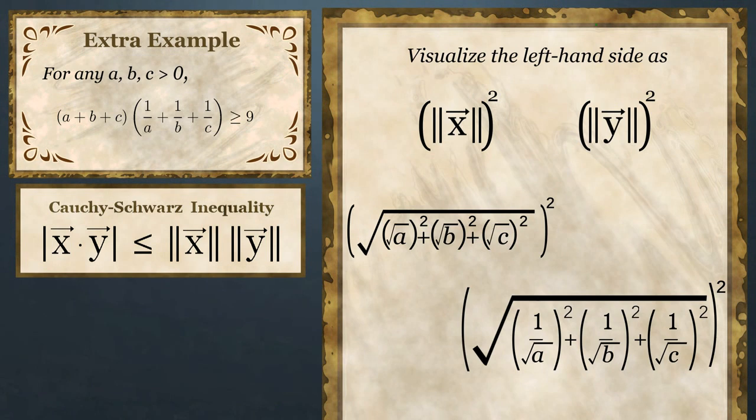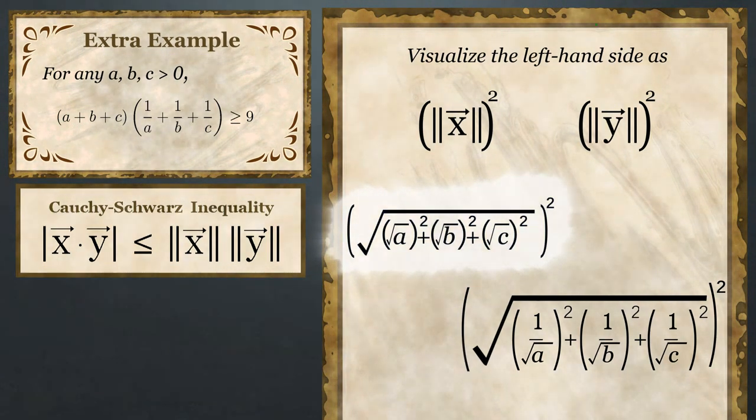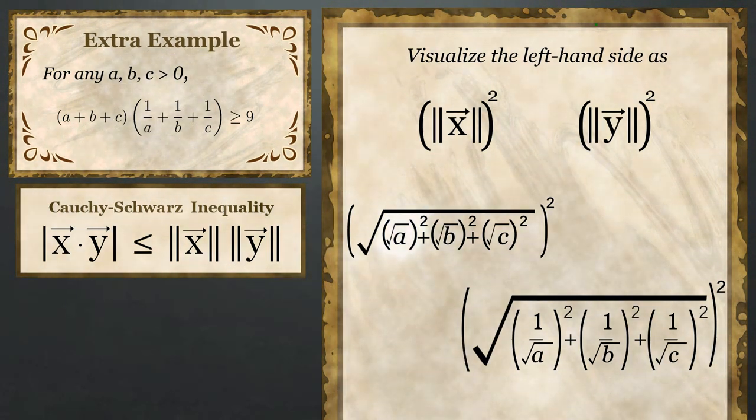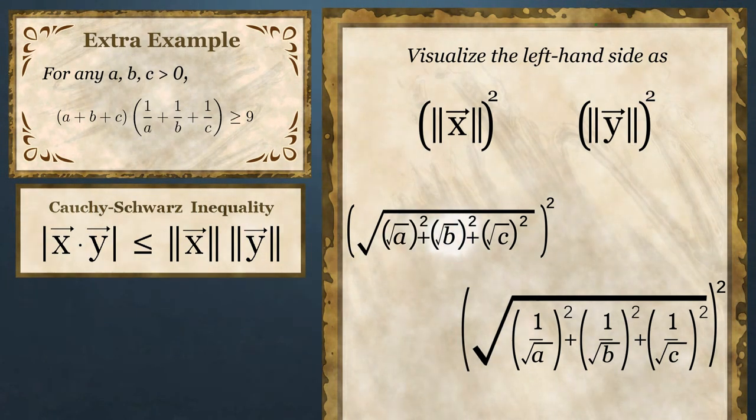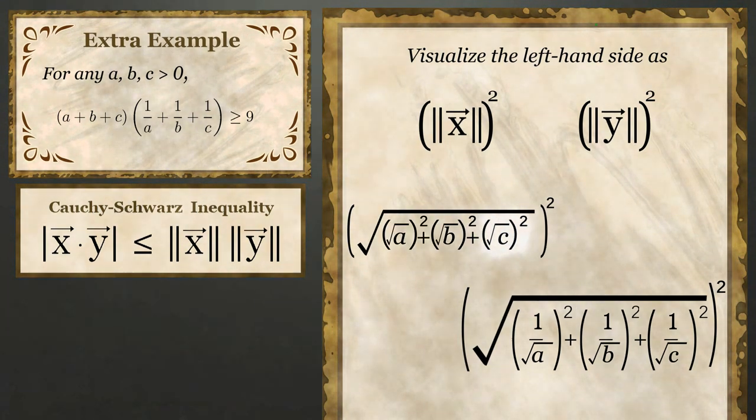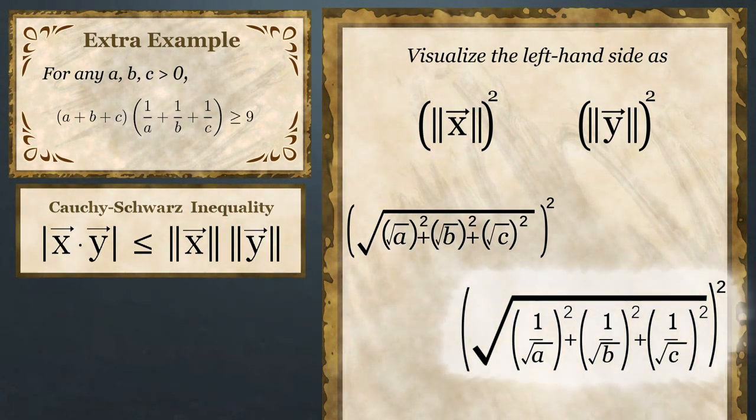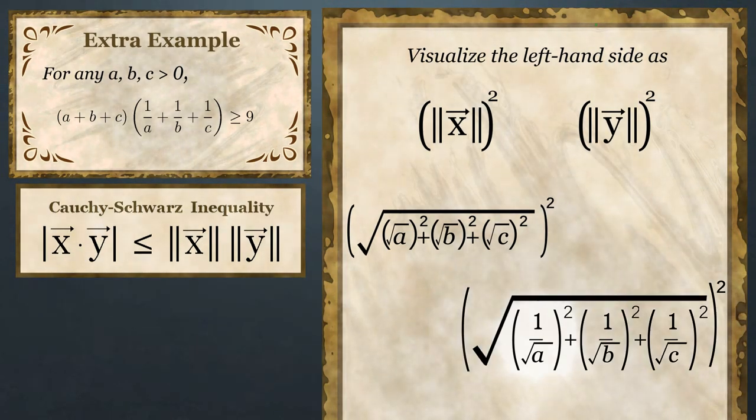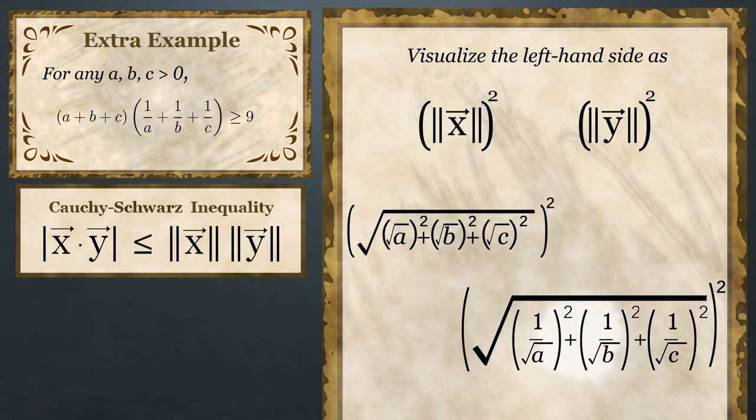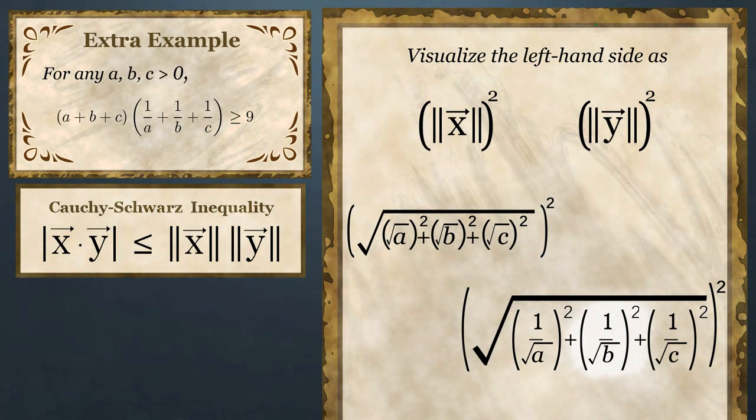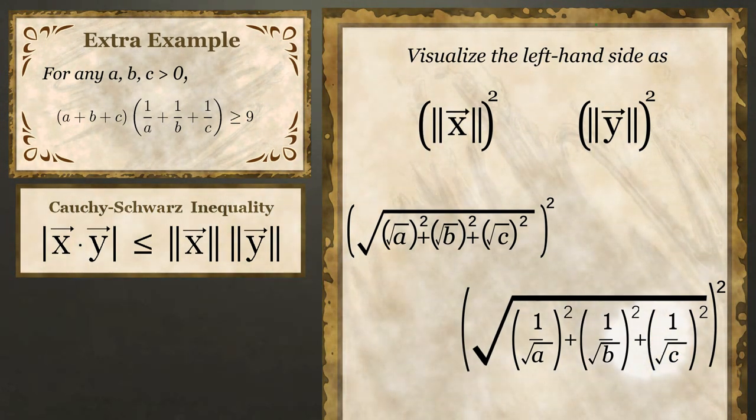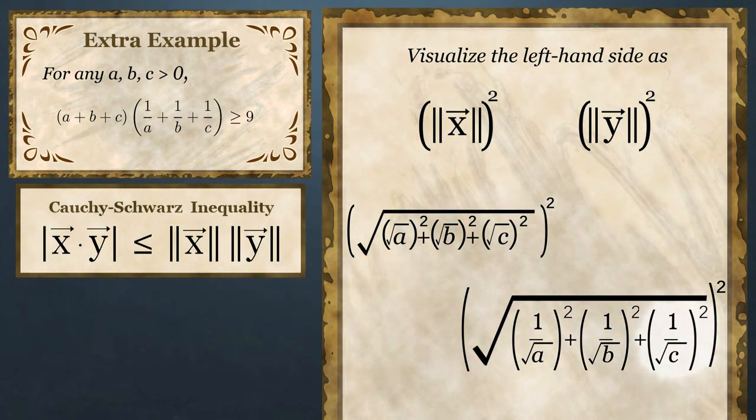Namely, we rewrite it as the product of the square of square root of a squared plus square root of b squared plus square root of c squared, with the square of 1 over square root of a squared plus 1 over square root of b squared plus 1 over square root of c squared.